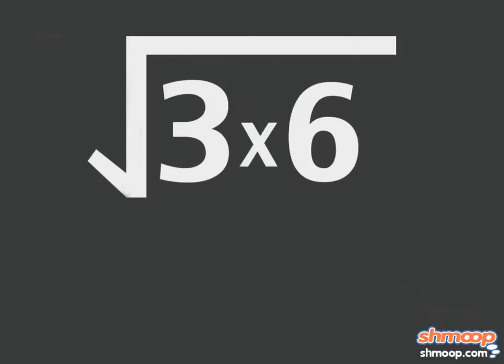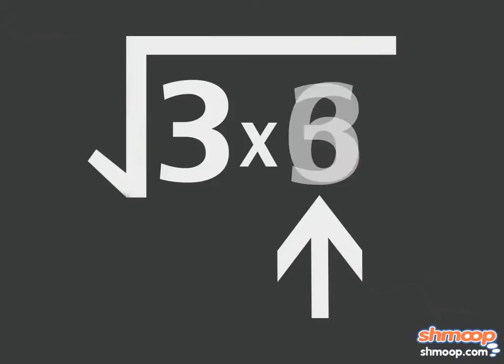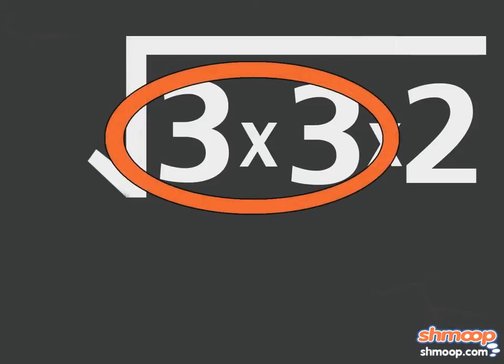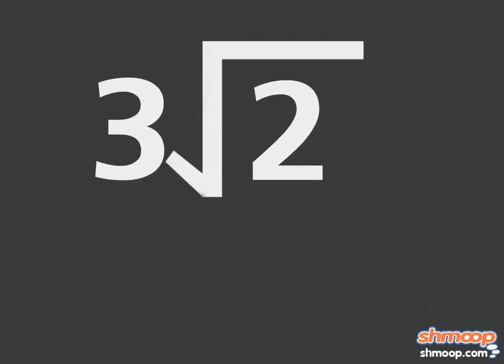Three times six equals 18. Factor again until all the numbers are primed. This gives us the square root of three times three times two. Now we can pull any doubles out of the box, like those double threes. This gives us three times the square root of two.